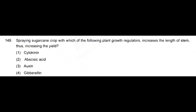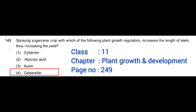Spraying sugarcane crop with which of the following plant growth regulators increases the length of stem, thus increasing the yield? Correct answer: option 4, gibberellin.